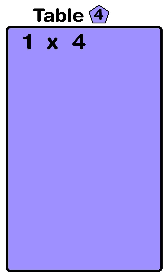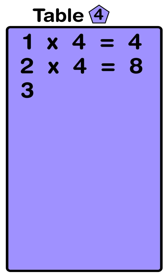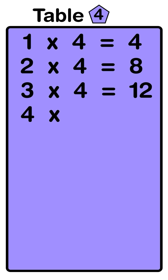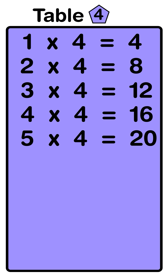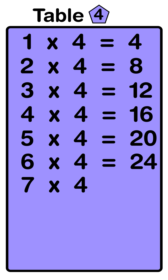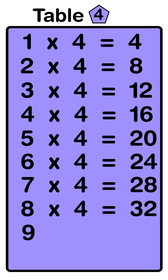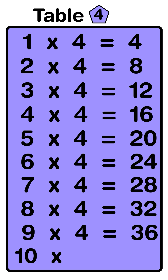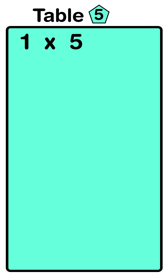One four's are four, two four's are eight, three four's are twelve, four four's are sixteen, five four's are twenty, six four's are twenty-four, seven four's are twenty-eight, eight four's are thirty-two, nine four's are thirty-six, ten four's are forty.